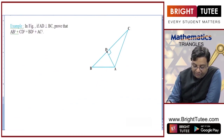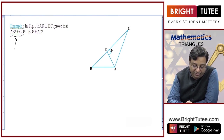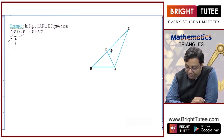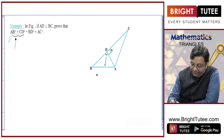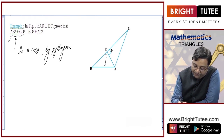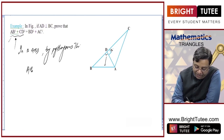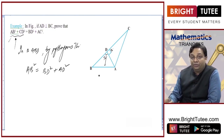In this figure, AD is perpendicular to BC, so this angle is 90 degrees. We need to prove AB² + CD² = BD² + AC². For triangle ABD, AB is the hypotenuse opposite 90 degrees, so by Pythagoras theorem, AB² = BD² + AD².